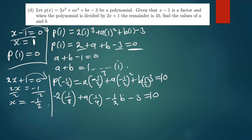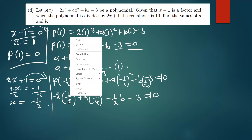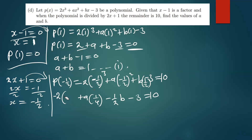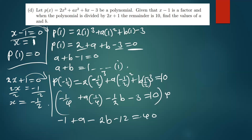To simplify, first note that -2 × (1/8) = -1/4. Now multiply the whole expression by 4 to clear fractions: we get -1 + a - 2b - 12 = 40. Combining -12 and -1 gives -13, so we have a - 2b - 13 = 40, which means a - 2b = 53.